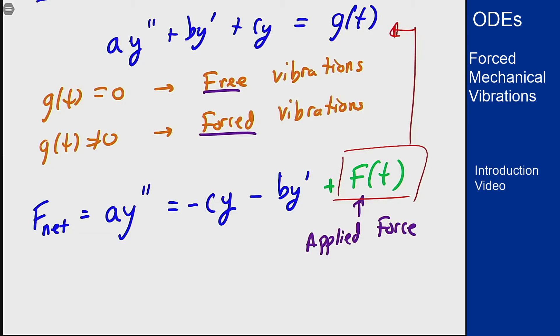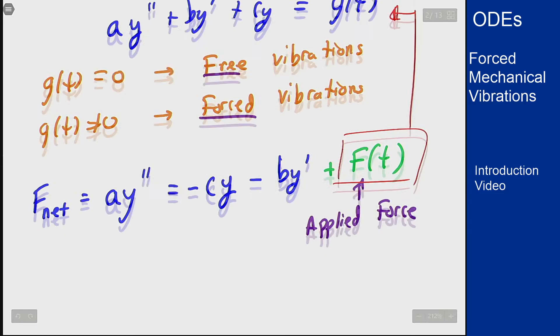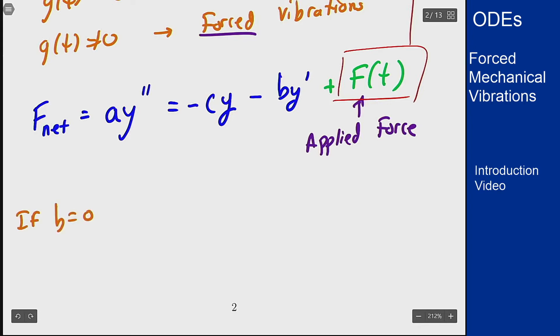There are two options here based on the value of this b coefficient. We could have, as before, an undamped forced vibration or a damped forced vibration depending on if b is 0 or non-zero. If b = 0, then we have an undamped forced vibration. If b > 0, then we have a damped forced vibration.